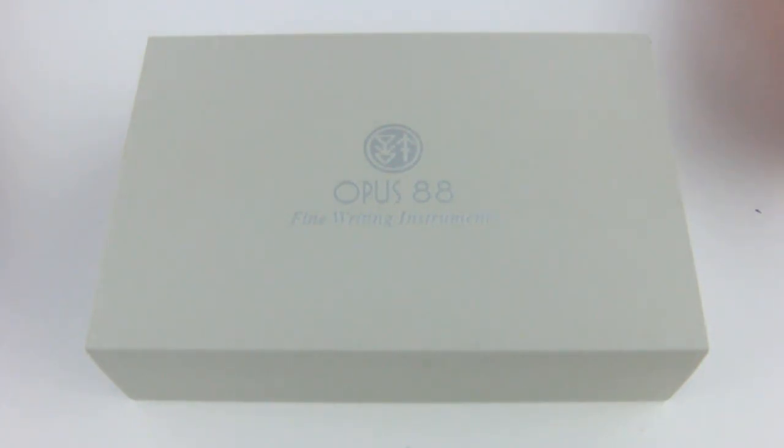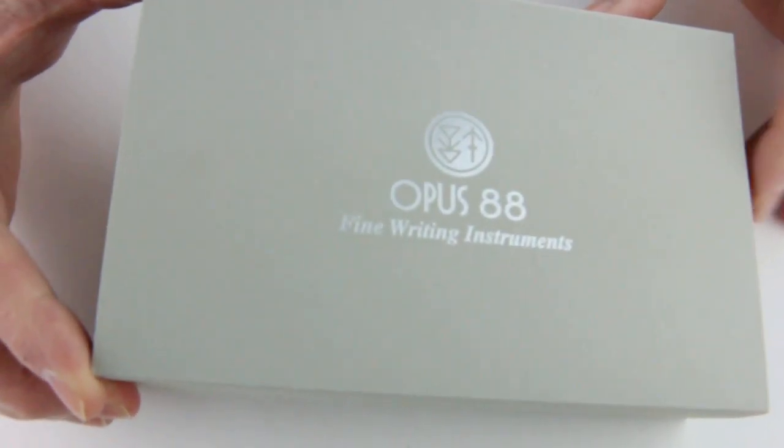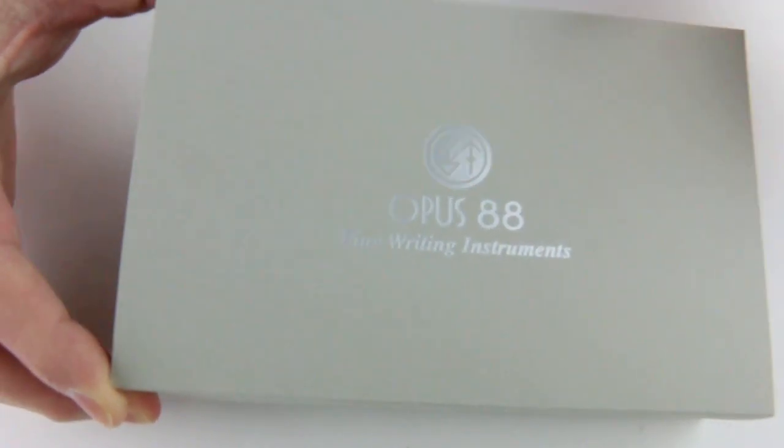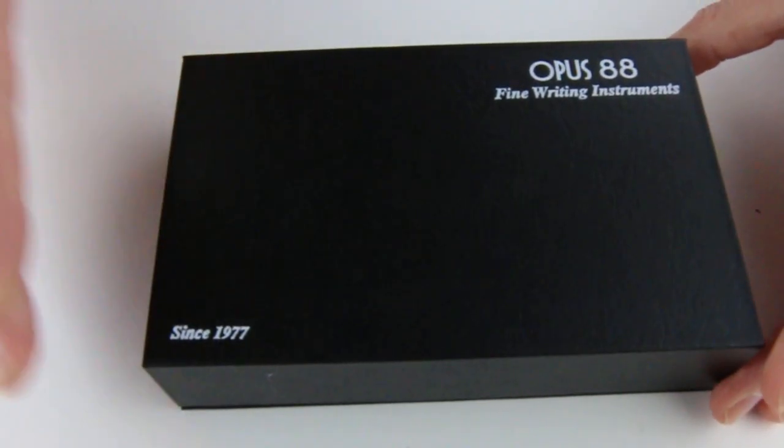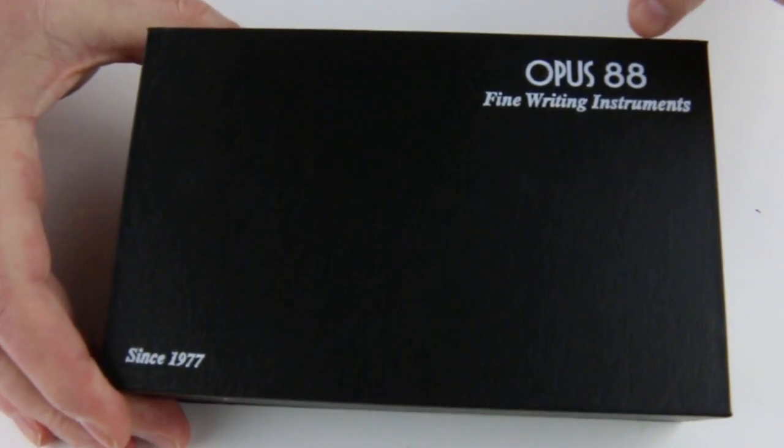This is the Opus 88 Flow fountain pen. It comes in a gray cardboard sleeve with the Opus 88 logo on top. The sleeve slides off to reveal a black cardboard box with the Opus 88 logo.